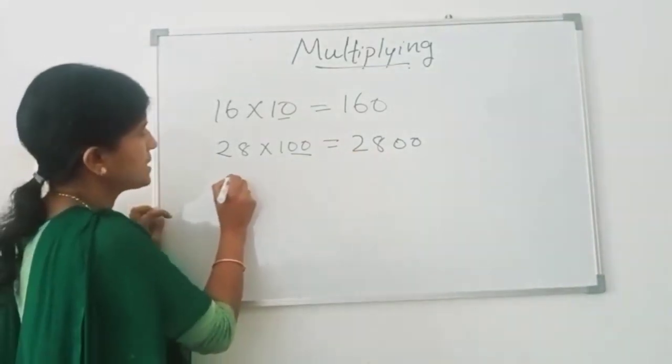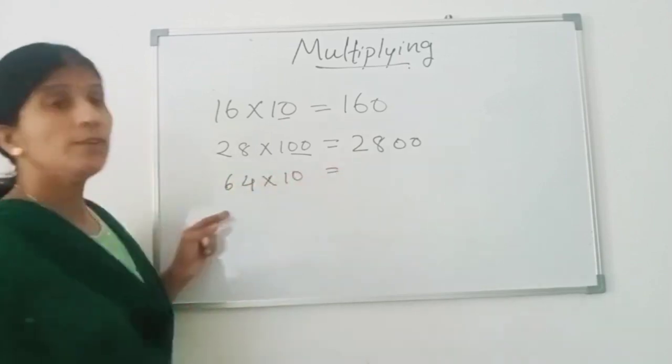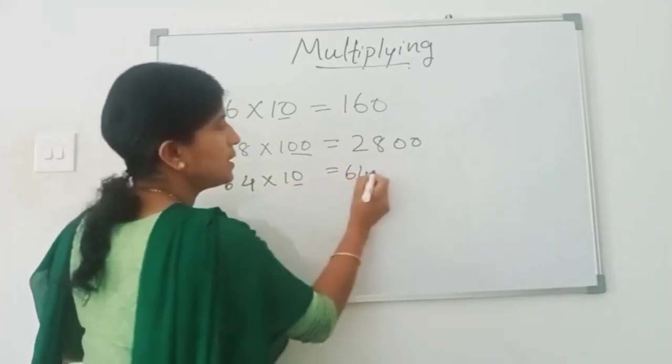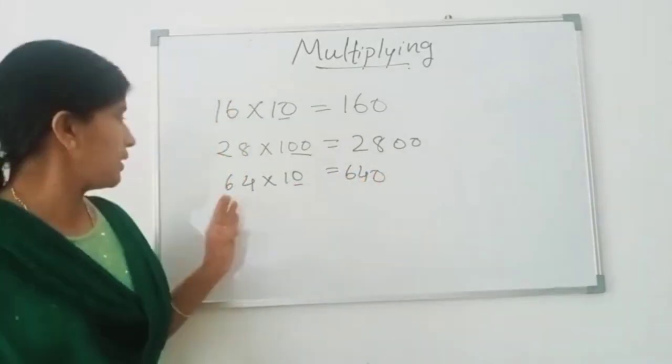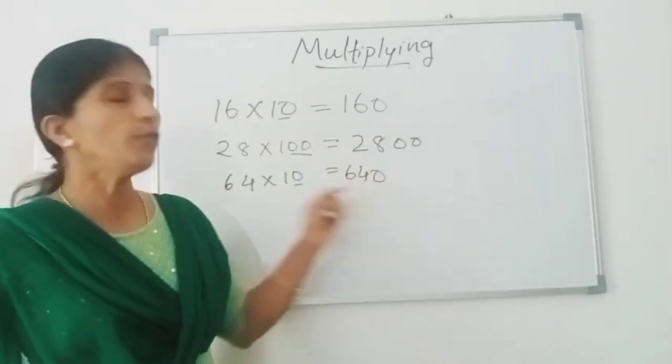64 times 10. Write 64 and add this 0. 640. 64 times 10 is equal to 640.